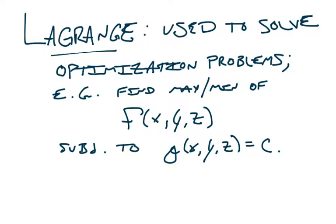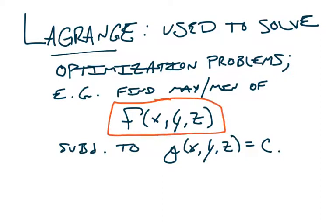We left off in class talking about the method of Lagrange multipliers. The idea is that you're given a problem to solve, typically in the context of optimization — finding the max or minimum of some function f of x, y, and z. This method works for any number of variables, and it's always subject to some sort of constraint.